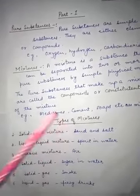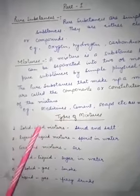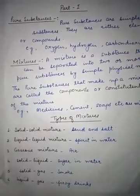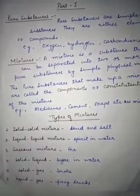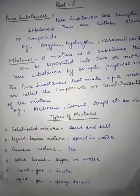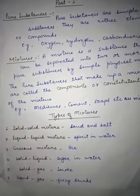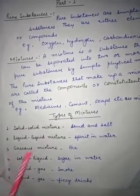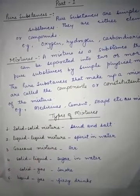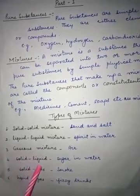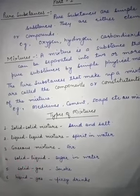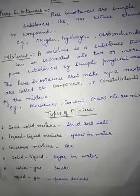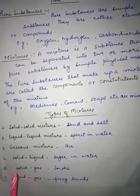Now we have types of mixtures. First is solid-solid mixture — by mixing sand and salt we can make a solid-solid mixture. Second is liquid-liquid mixture — mixing spirit and water forms a liquid-liquid mixture. Third is gaseous mixture — air is a mixture of different gases, so it is a gaseous mixture. Fourth is solid-liquid mixture — sugar dissolved in water is an example.